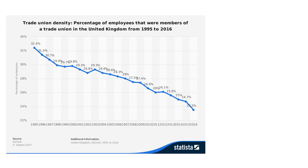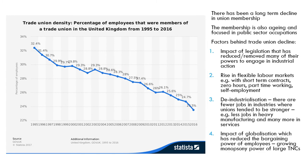Trade union membership in the UK has declined a lot in recent years. This chart shows the percentage of employees that are members of a trade union, and we can see it decreasing over time to just below a quarter. There are several reasons behind this.